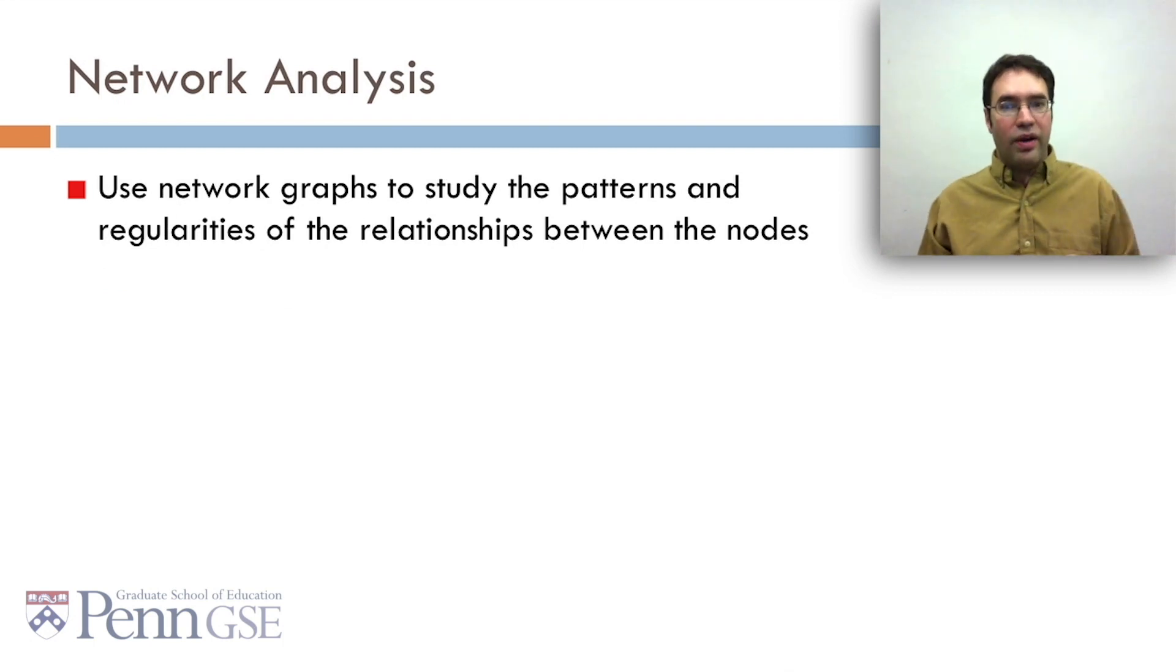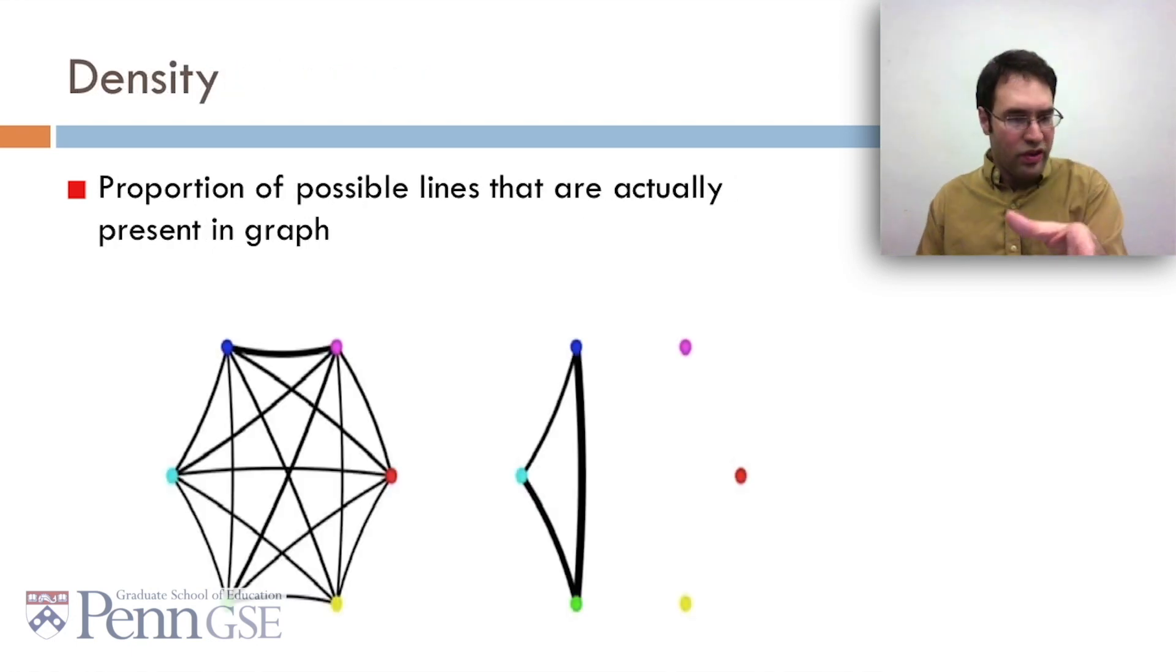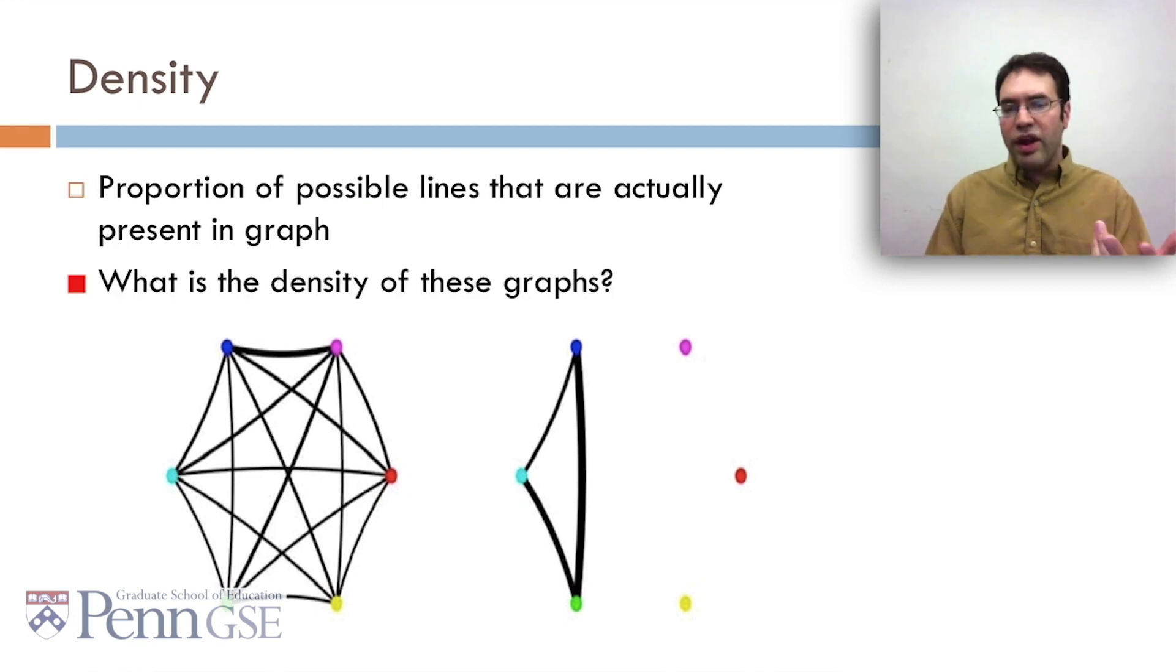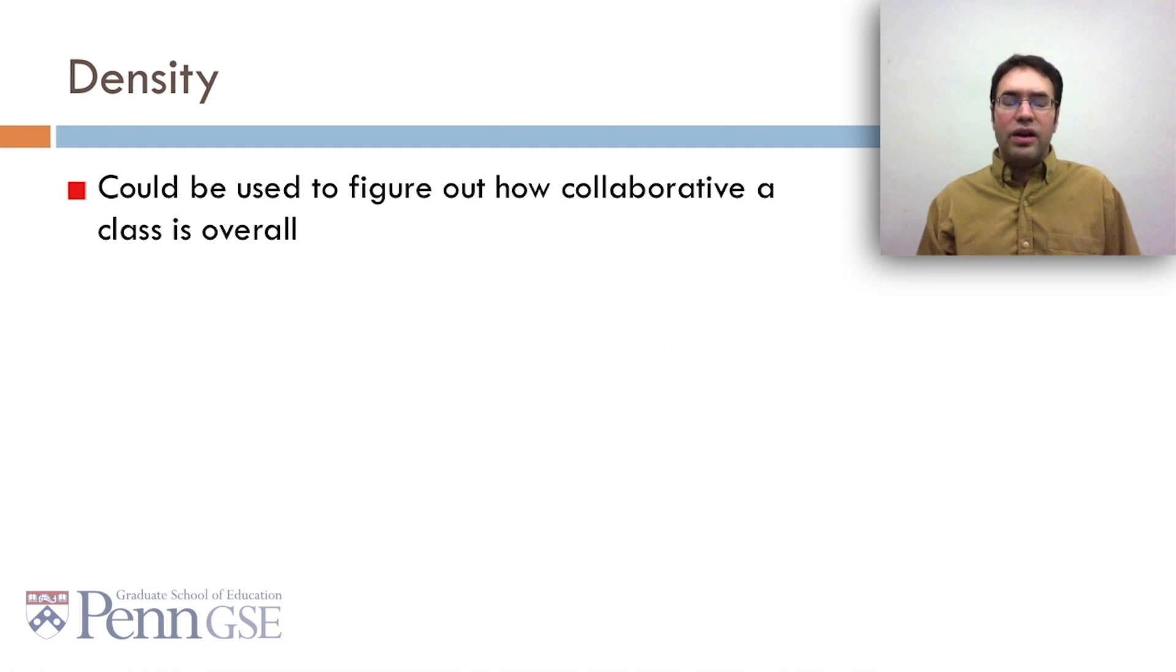We can use network graphs and network analysis to study the patterns and regularities of the relationships between the nodes. One such example is density, which is the proportion of possible lines that are actually present in the graph. So what's the density of these graphs? The one on the left, every single possible connection occurs, and so it's 100%. The one on the right could potentially have up to 15 connections, but only has three, which is 20%. Density could be used to figure out how collaborative a class is overall. It's no question that the graph where everyone's talking to everybody is probably a more collaborative class than the ones where no one's talking to anybody except three kids.